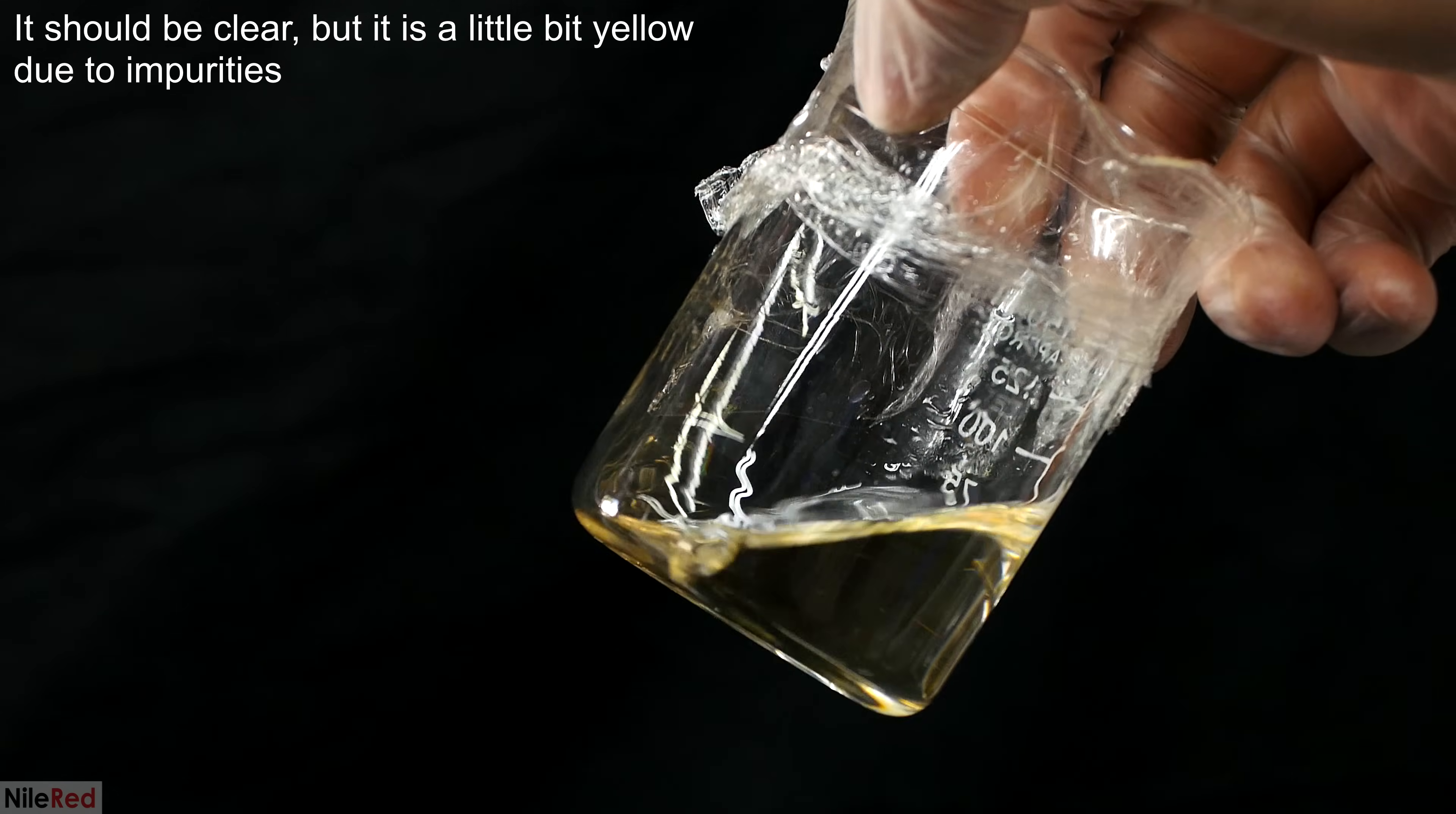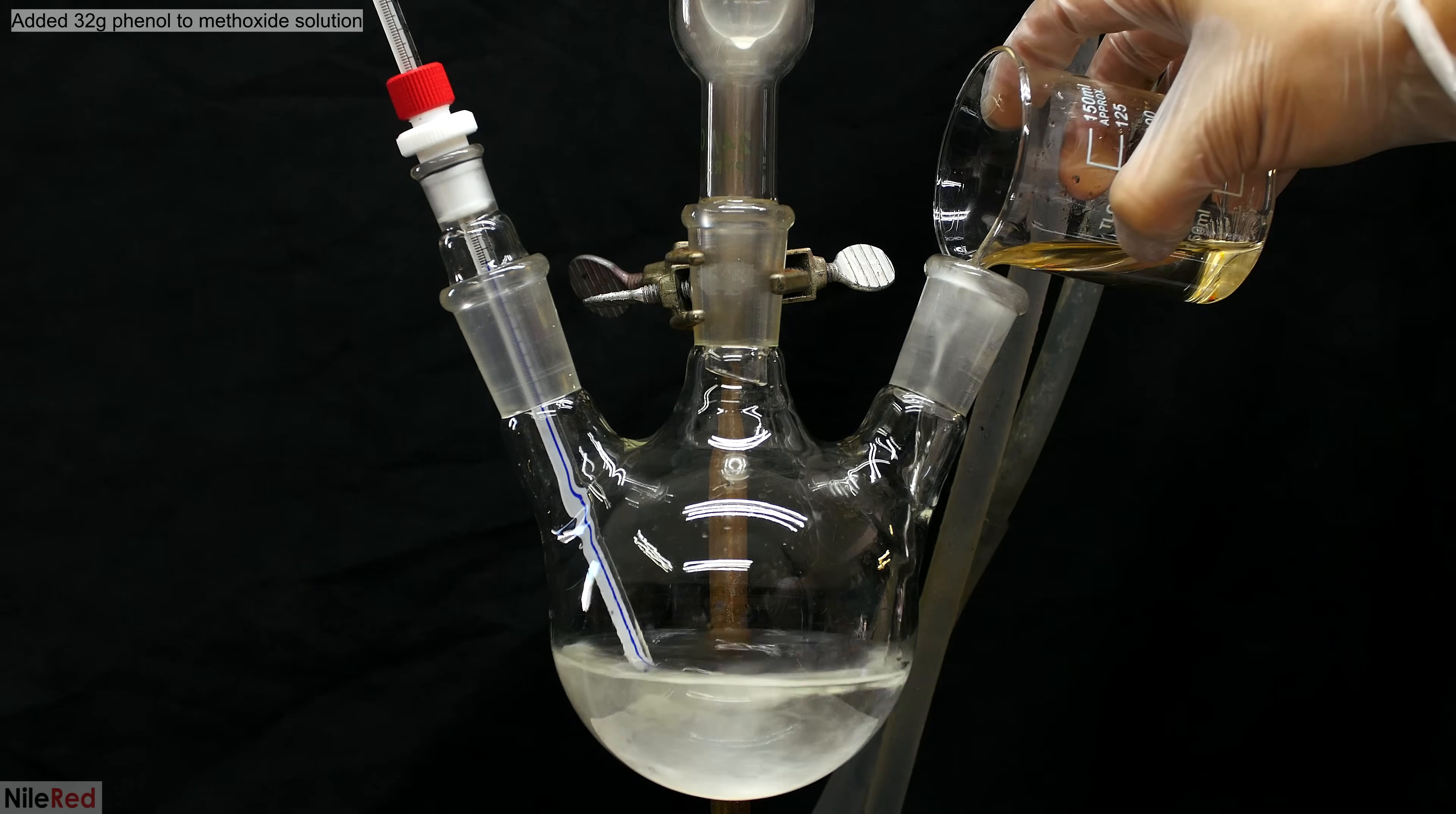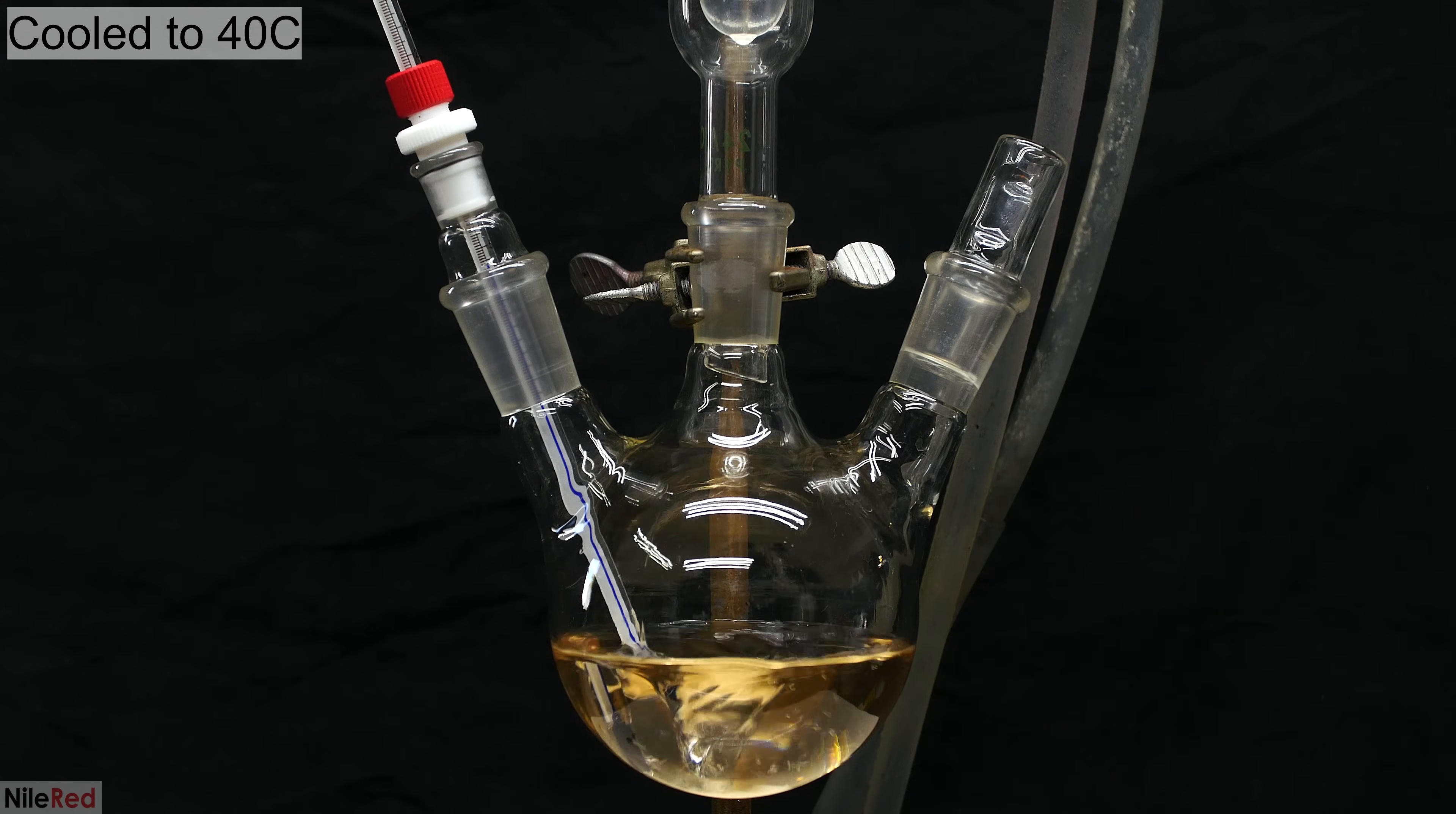It only takes a few minutes of blasting the phenol with the heat gun to be left with a nice clear liquid. When I come back to the apparatus, the temperature is below 50, so I go ahead and add the phenol. All 32 grams of the phenol was added in at once. You can see here that by melting the phenol, it was a lot easier to add because we simply had to pour it, and it dissolves much quicker in the methanol. I stirred the solution for several minutes and I waited for it to cool down below around 40°C.